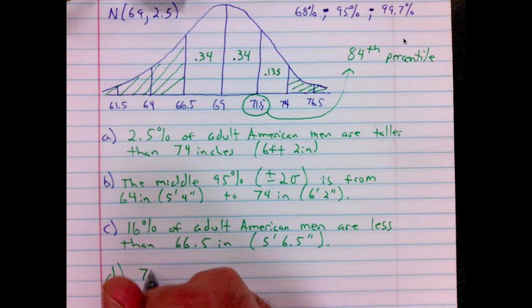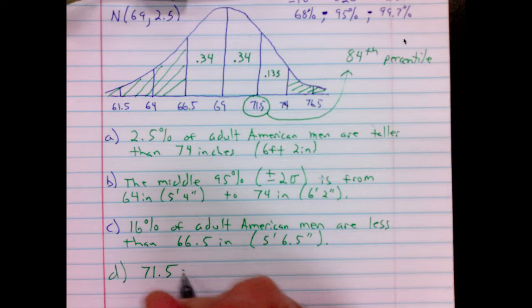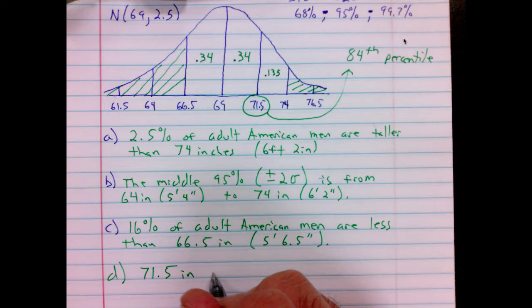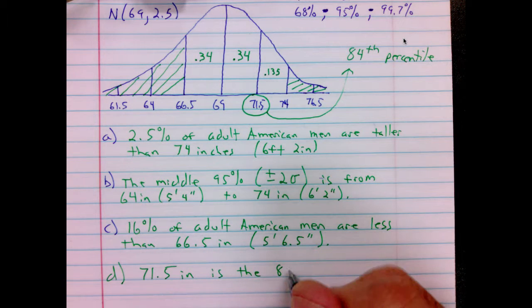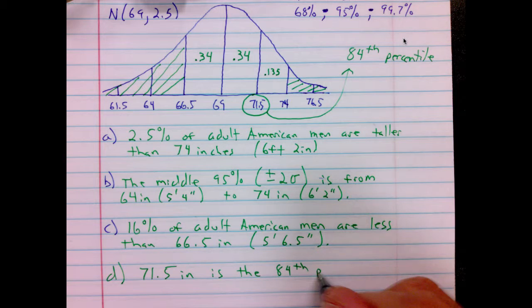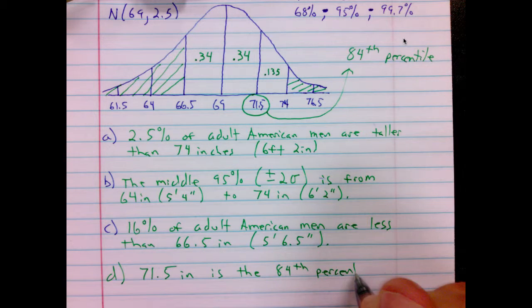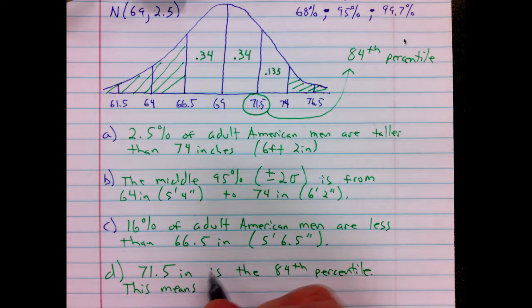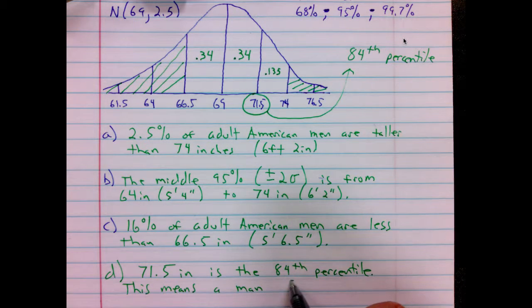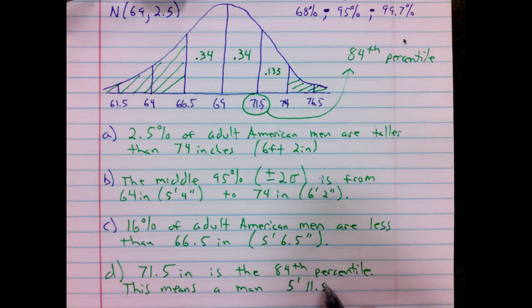71.5 inches is the 84th percentile. So this means a man 5 foot and 11.5 inches, which is what 71.5 inches is...